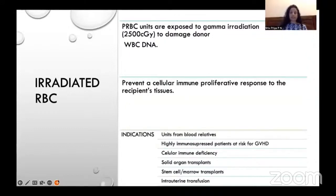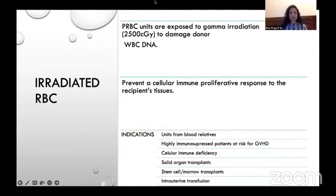Irradiated RBCs: the RBC units are exposed to gamma radiation of 2500 cGy to damage donor WBC DNA and prevent cellular immune proliferation response to the recipient's tissue. Main indications are units from blood relatives, highly immunosuppressed patients at risk of graft-versus-host disease, cellular immune deficiency, solid organ transplants, stem cell or bone marrow transplants, and intrauterine transfusion.